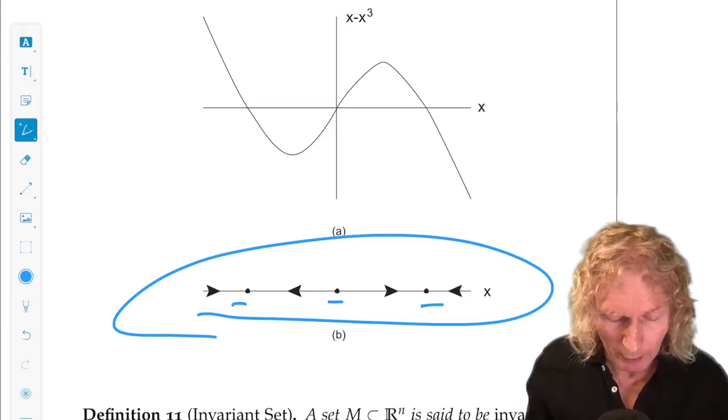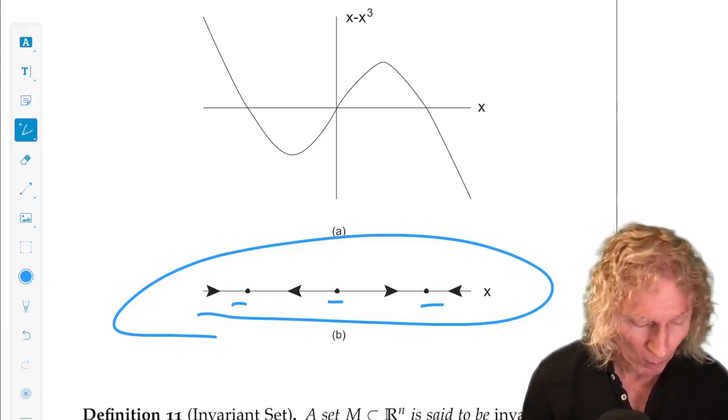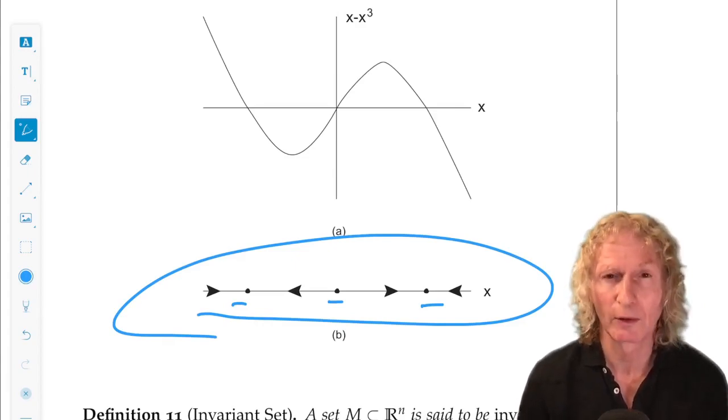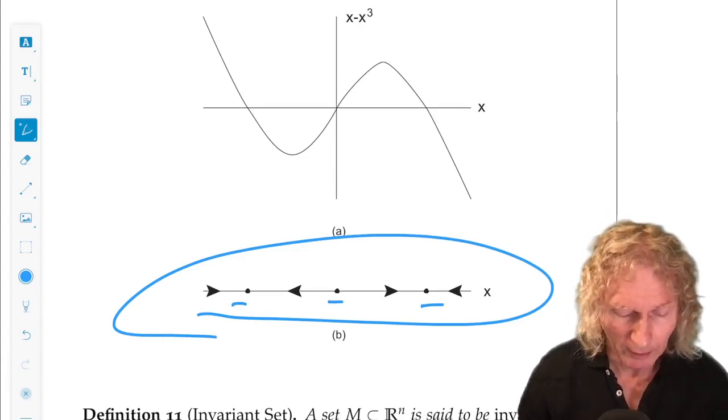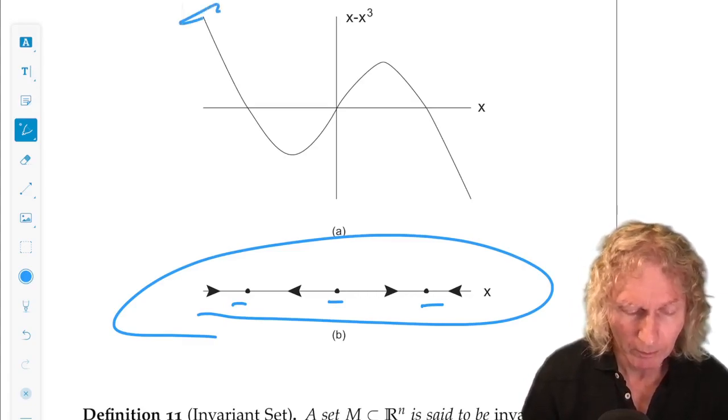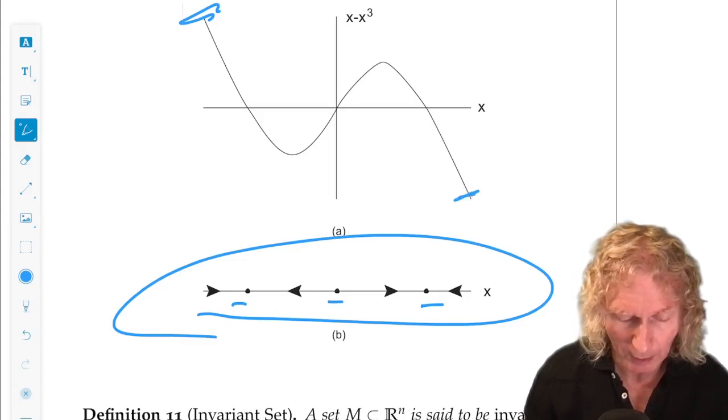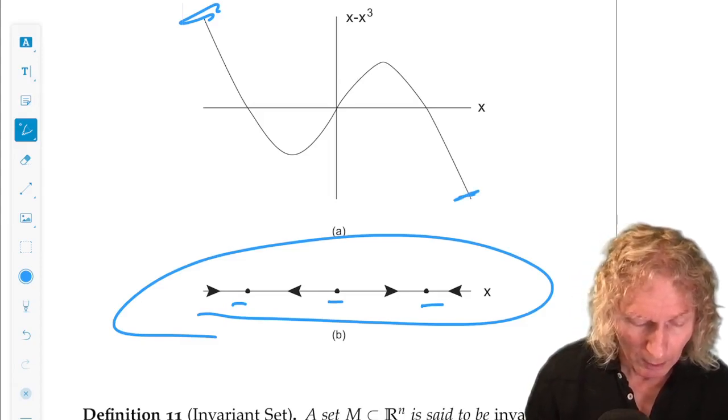Don't worry about the arrows yet. But what do we see in the graph directly above? Well, what we see is the vector field. I plotted the vector field x minus x cubed. And you can see that as x goes to minus infinity, it goes to plus infinity. As x goes to infinity, it goes to minus infinity. It has three zeros.